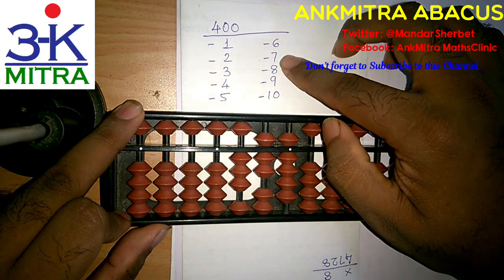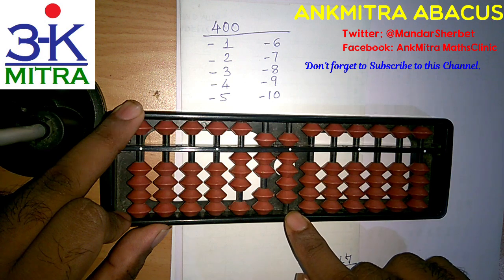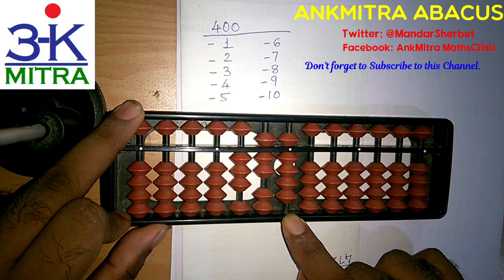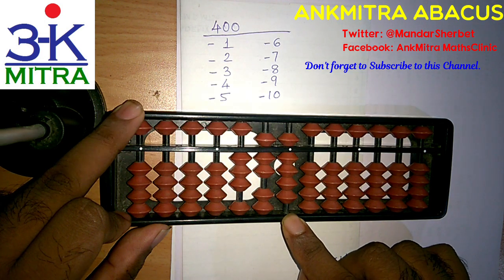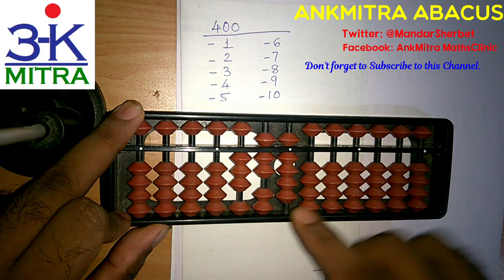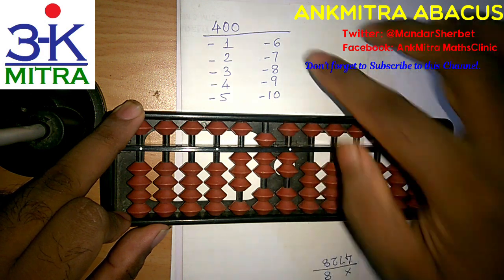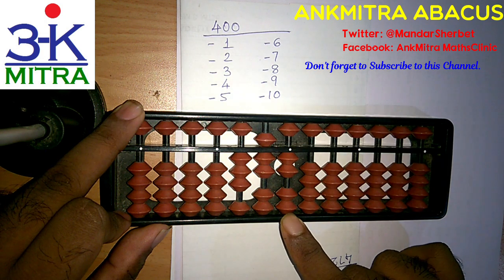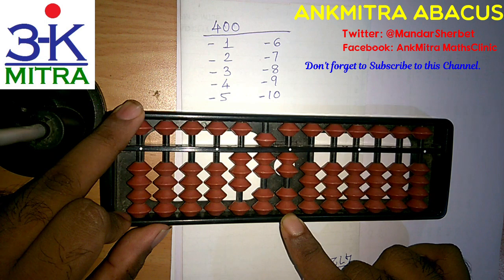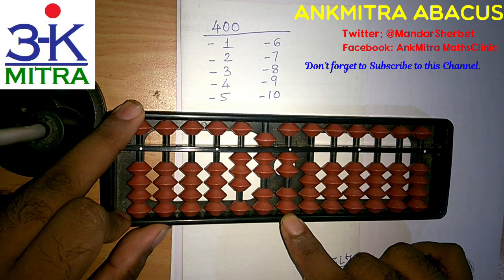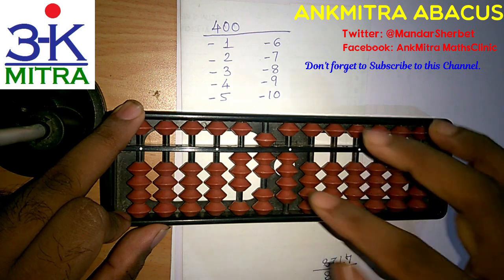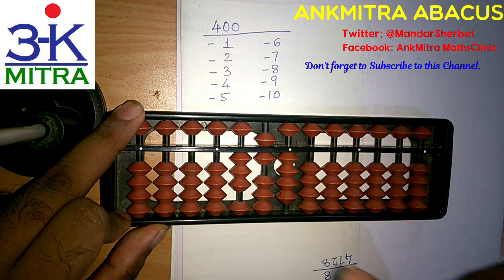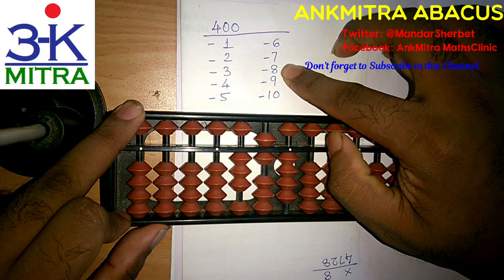Now coming to the subtraction of 7. For subtraction of 7 I do have 7 bits available on the units place, so I can do it directly — minus 7 is done directly. Now coming to minus 8. I don't have 8 bits available on the units place, so I will have to use the big friend formula of minus 8 which is plus 2 minus 10. So I will add 2 here and do minus 10 on the next left rod and the subtraction of 8 is done.